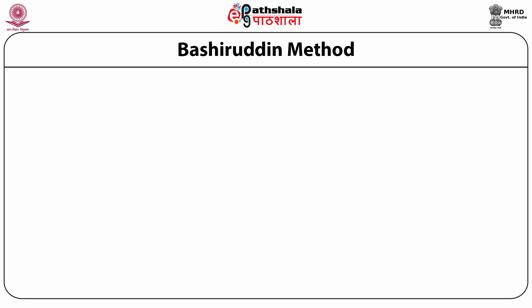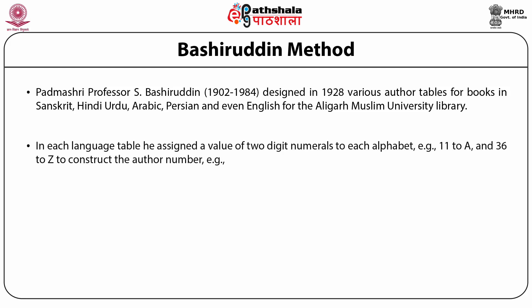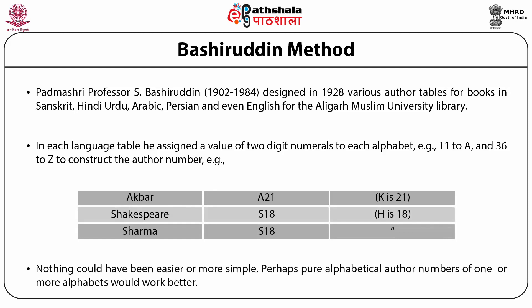Another method in India was designed by Padmashri Professor S. Bashiruddin. He designed it in 1928 for various languages — Sanskrit, Hindi, Urdu, Arabic, Persian and even English — for the Aligarh Muslim University Library. In each language table, he assigned a value of two-digit numerals to each alphabet, for example 11 to A and 36 to Z, to construct the author number. For example, Akbar got the number A21, Shakespeare is S18, and Sharma is S18. Perhaps a pure alphabetical author number of one or more characters would have worked better.